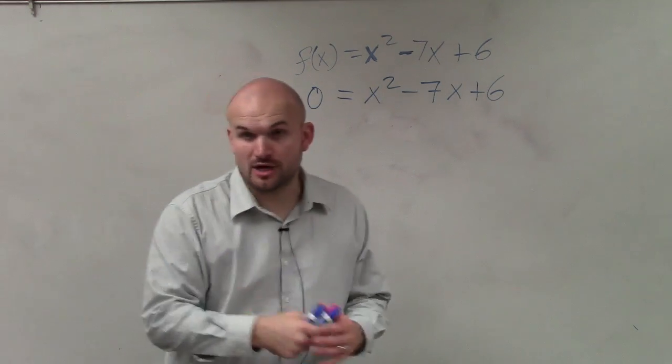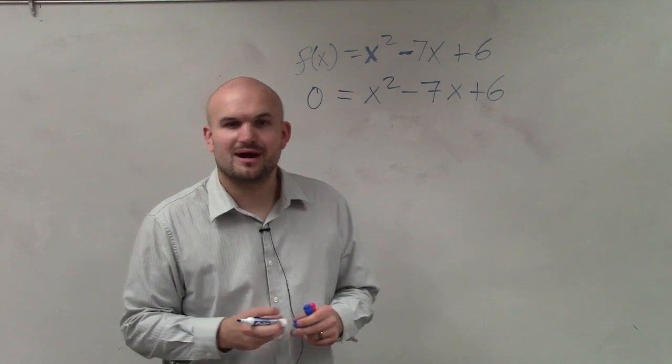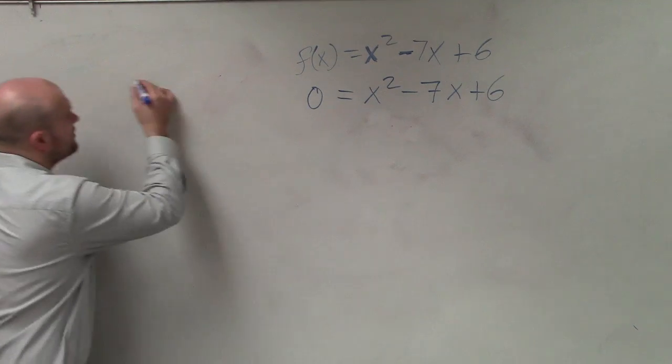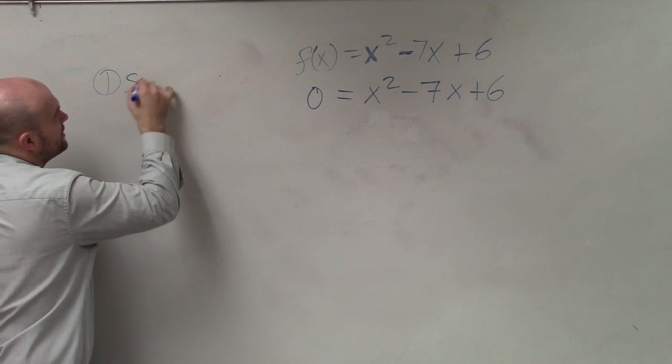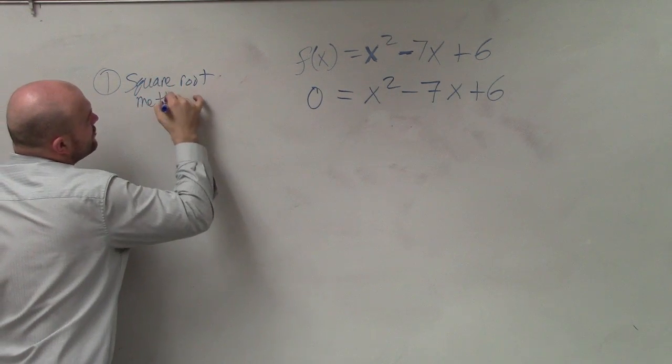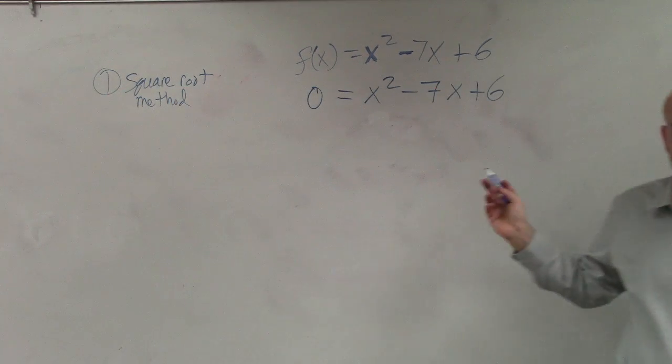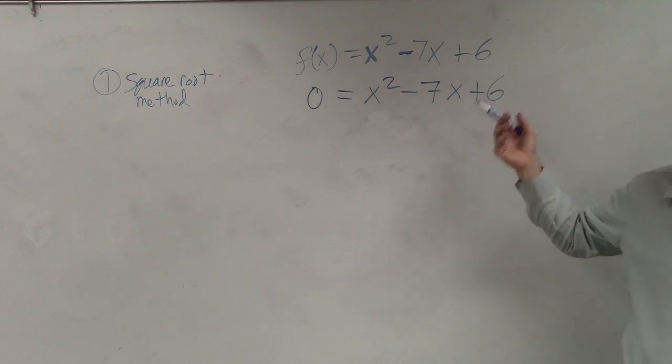Now, let's go through what we've learned. The first example, I showed you guys what we called the square root method. Now, using the square root method, that was only when we had one x term. Do we only have one x term? No, so we can't use the square root method.